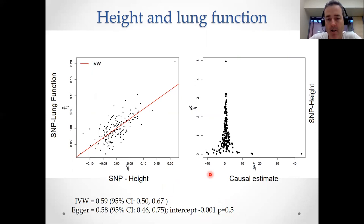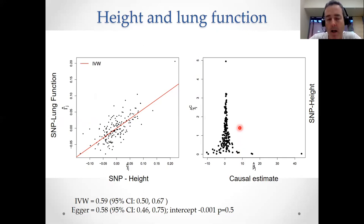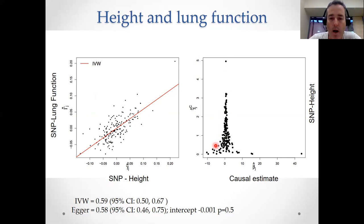A useful diagnostic when performing Egger regression is something called a funnel plot. We plot the instrument strength on the y-axis against our estimates of the causal effect on the x-axis. If there's no directional pleiotropy in our data, the plot should have a nice inverted funnel shape. This shape arises because stronger instruments have more precise causal effect estimates with less variability, while weaker instruments vary more widely. The symmetry here is a good visual indicator that there's not a lot of horizontal pleiotropy influencing the results.